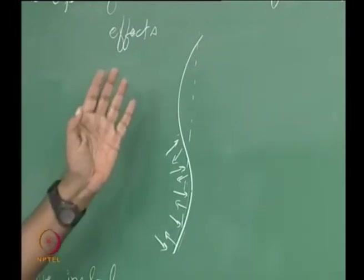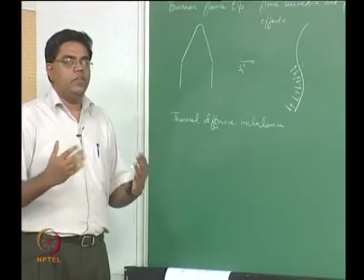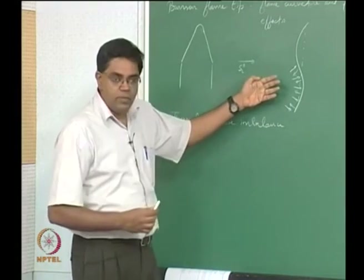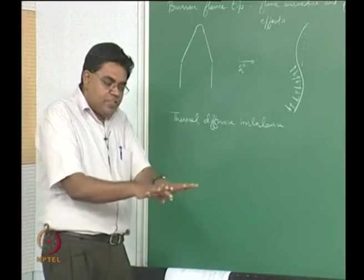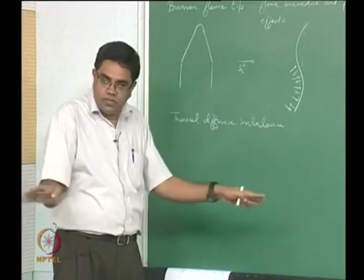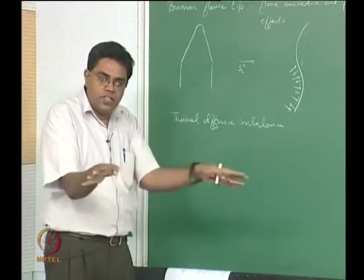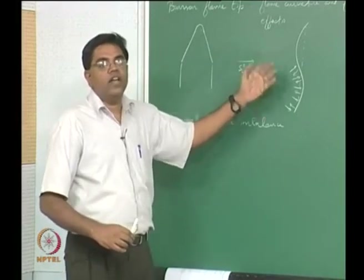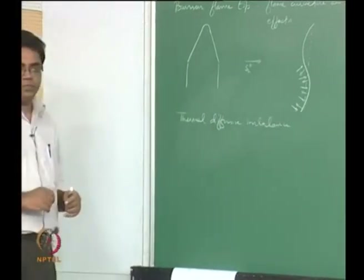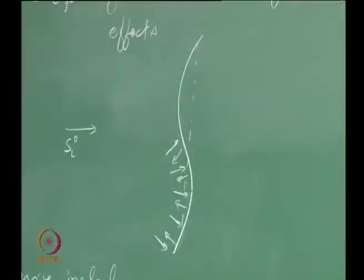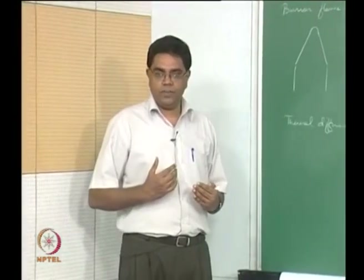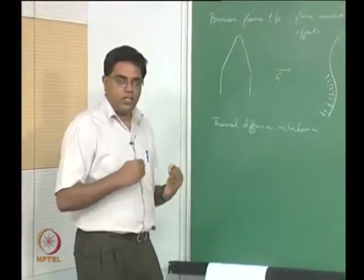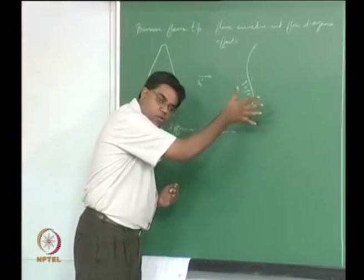For a fuel lean flame, the deficient reactant is fuel, and it is more critical to think about the deficient reactant. The deficient reactant now spreads thinner in a radially outward manner — instead of feeding a planar flame straight, it is spreading itself thin. This means the flame is running out of the deficient reactant more than in the case of a planar flame with a concave curvature relative to upstream. So this has a tendency to decrease the flame speed.